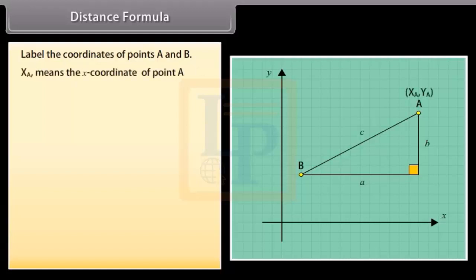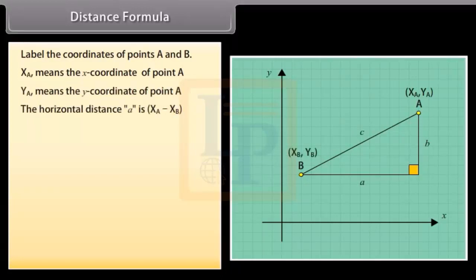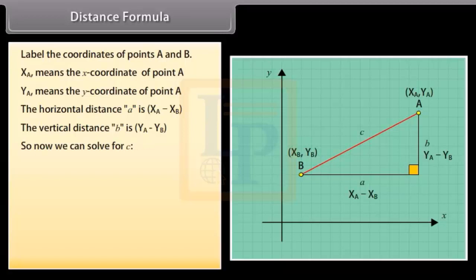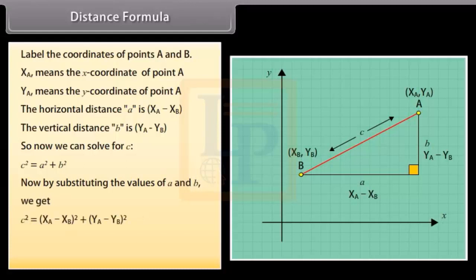Now using Pythagoras theorem, we get A square plus B square is equal to C square. Now label the coordinates of points A and B. XA means the x-coordinate of point A, YA means the y-coordinate of point A. The horizontal distance A is XA minus XB. The vertical distance B is YA minus YB. So now we can solve for C which is the distance between the points. C square is equal to A square plus B square. Now by substituting the values of A and B, we get C square is equal to XA minus XB whole square plus YA minus YB whole square. The final result is C is equal to under root of XA minus XB whole square plus YA minus YB whole square.